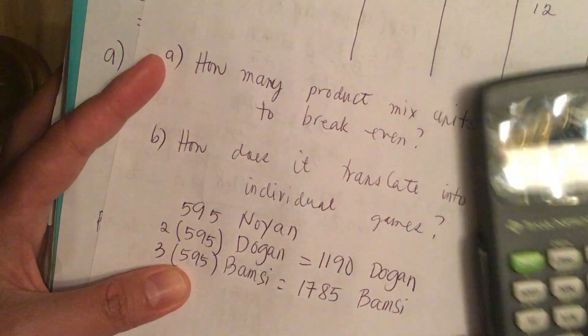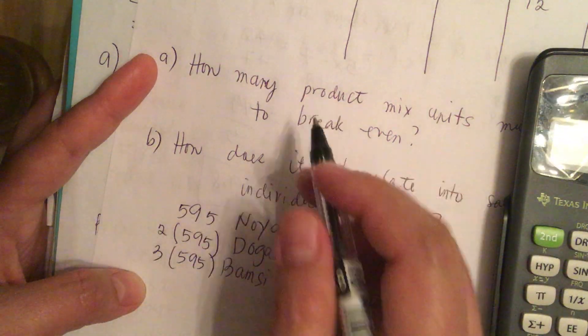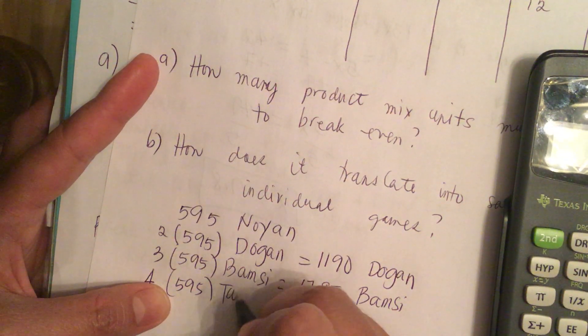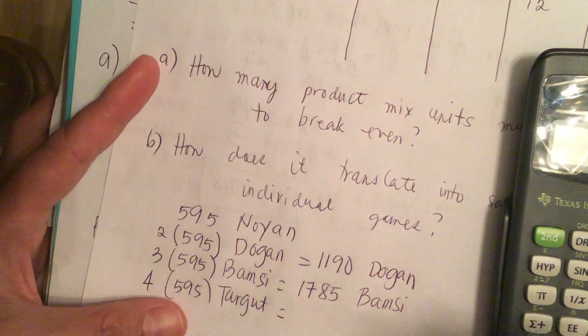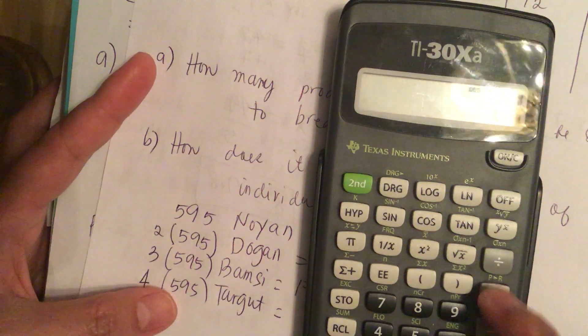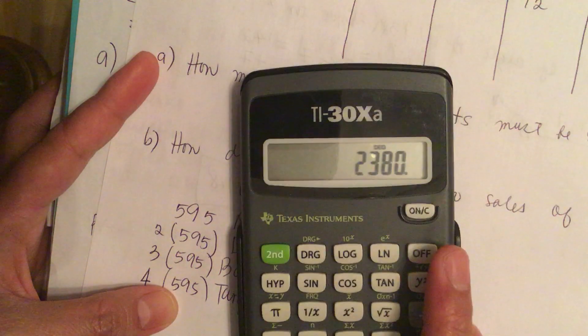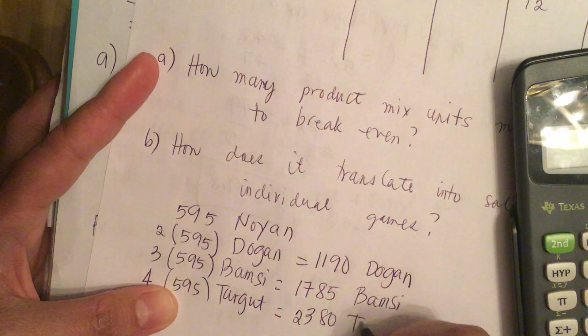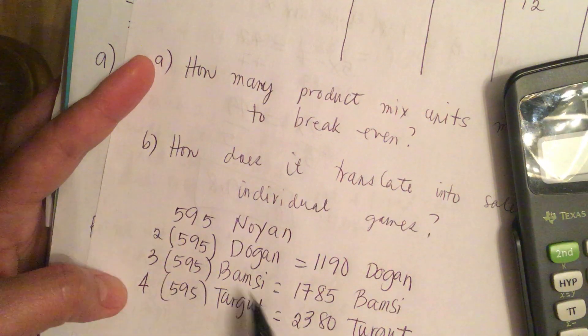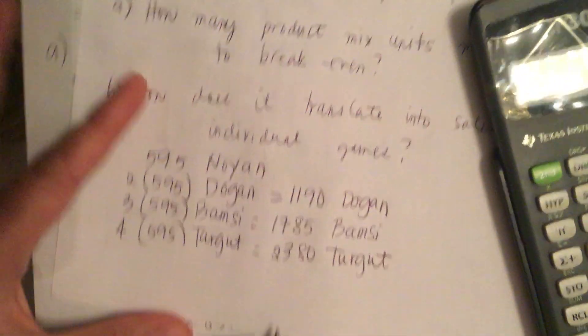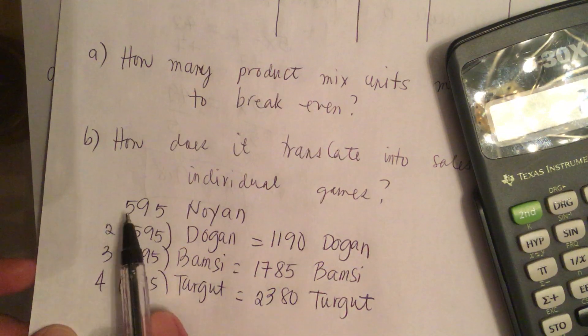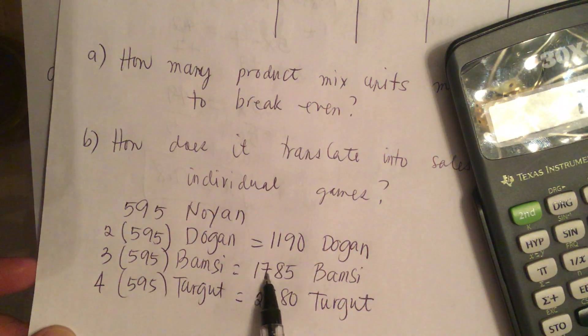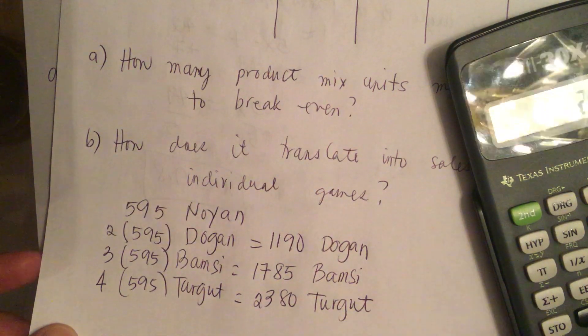And for Turgut, it's 4 times this. So 4 times 595 is 2,380. So these are the answers for part B: 595 Noyan, 1,190 Dogan, 1,785 Bamsi, and 2,380 Turgut.